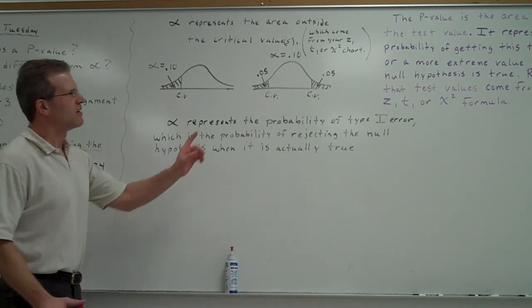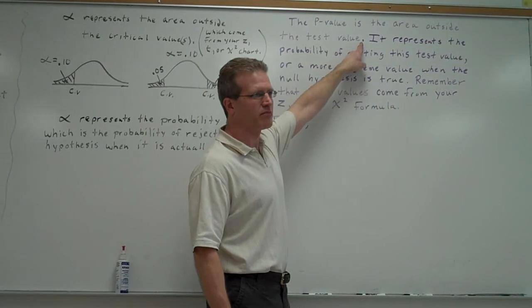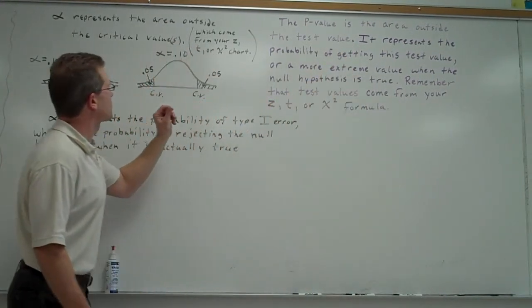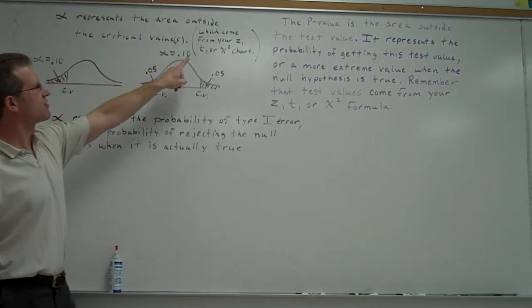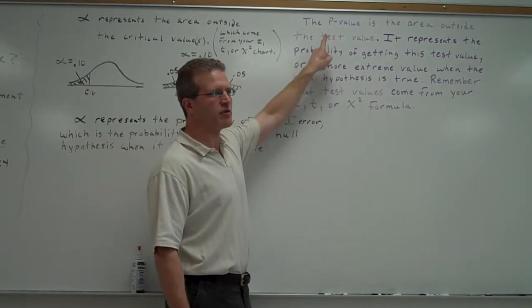All right, the p-value. The p-value is the area outside the test value. Now, make sure I'm clear on this. The critical values come from your charts, your Z, T, or chi-squared chart. The test value comes from a formula.